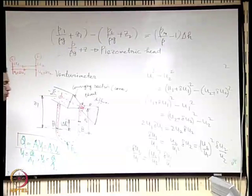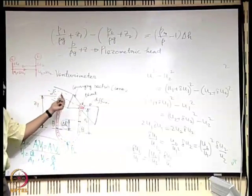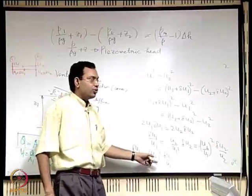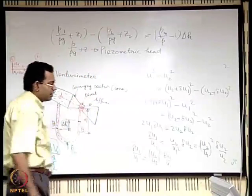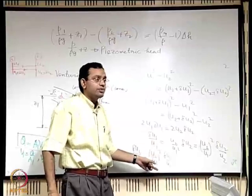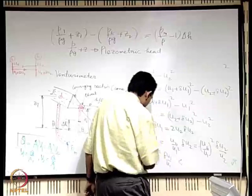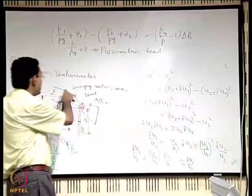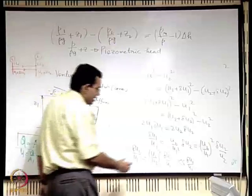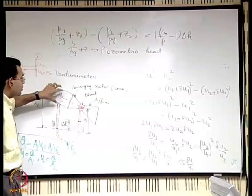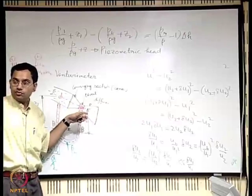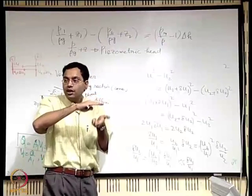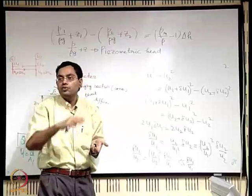Now, at section 1 the area is large so velocity is less, meaning u1 < u2, so u1/u2 is less than 1 and its square is even smaller. Therefore δu2/u2 is expected to be much less than δu1/u1, provided there is a great reduction in section. This means if the velocity is approximately uniform at section 1, it will be even more uniform at section 2 because the non-uniformity is much less.